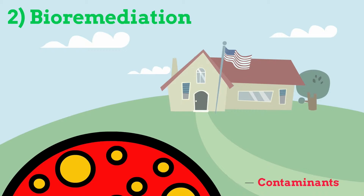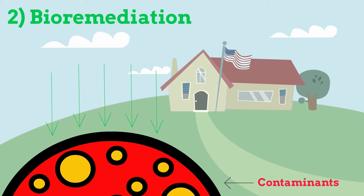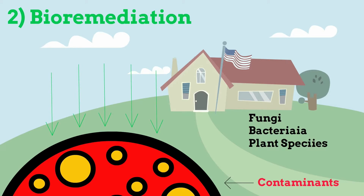Bioremediation is the use of microorganisms to remove pollutants from the soil or water. This is done either by treating contaminated materials at the site or by removing contaminated materials that are then treated elsewhere. Different microorganisms are used to remove contaminants and are usually uniquely suited for certain types of chemicals. Among these microorganisms may be fungi, bacteria, or certain plant species. Bioremediation is in common use for oil spills because microorganisms are extremely effective in breaking down many of the chemicals found in oil. This technique is often much less expensive than other technologies, but usually takes longer to fully decontaminate a site.